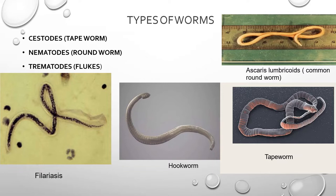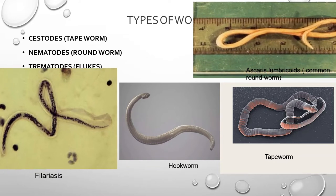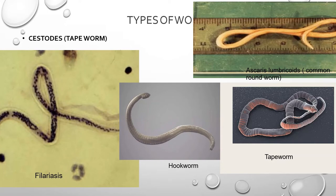We divide worms into three categories: cestodes, nematodes, and trematodes. Cestodes are tapeworms, nematodes are roundworms, and trematodes are flukes. These infect humans and cause different diseases. Infection by these parasites generally occurs via infected undercooked food, vegetables, raw meat, or drinking water. Common examples include Ascaris lumbricoides (roundworm), filariasis, hookworm, and tapeworm.